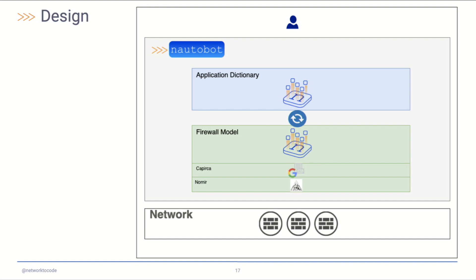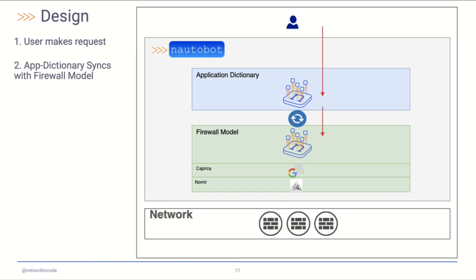The workflow for this is: user makes a request — that can be adding an application, adding to an existing application, or adding a relationship between applications. There is an ETL process, which allows us to apply business logic to optimize our rules. Then it gets to the firewall model, which models firewall rules. Capirca generates configuration. And finally, Nornir is used to deploy those configurations to the edge device.